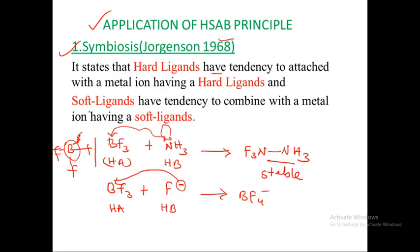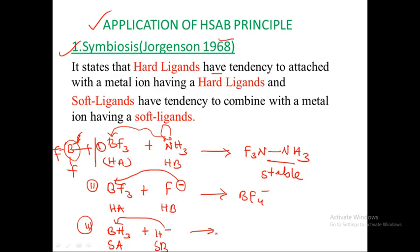For soft ligands, they have a tendency to combine with metals having a soft ligand. For example, BH3 (boron hydride) when it reacts with a hydride ion H⁻ — this is a soft acid and H⁻ is also a soft base. So soft ligands combine with the metal ion having a soft ligand.